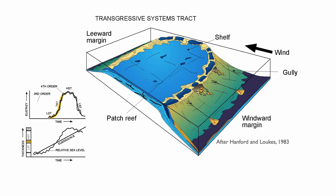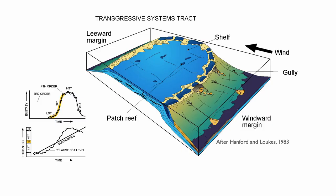During the transgressive system tract, it's really important to know on an isolated platform where the windward side and where the leeward side of the island is. Windward is the side that faces the prevailing wind direction, which also means facing the prevailing wave direction. We're developing during the TST an asymmetry on this isolated system, because on the windward side we have waves crashing on the island, clearing sediments away to the back of the island.